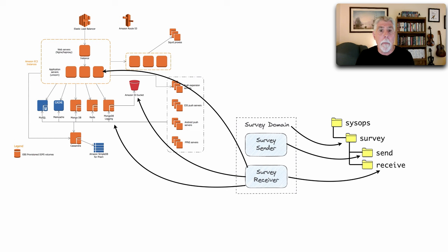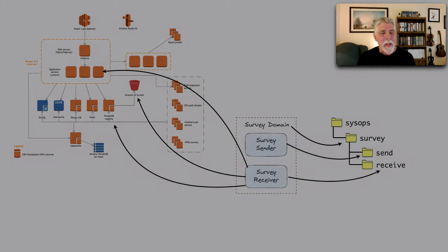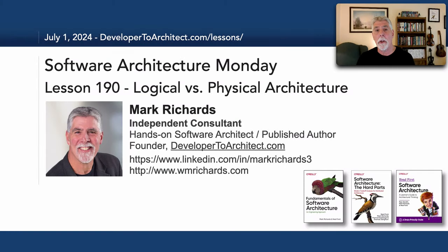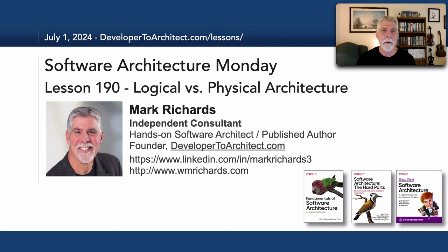Typically when creating an architecture we start with the logical architecture itself. In the next three lessons I will show you three techniques for creating that logical architecture. This has been lesson 190: logical versus physical architecture — understanding the purposes and differences between these two views. Thank you for listening, and stay tuned over the next few Mondays for the follow-on episodes on logical versus physical architecture.